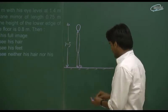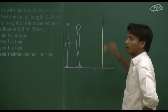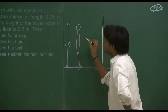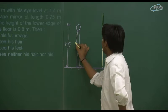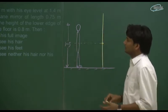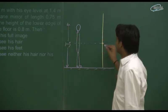This is a mirror. This is a wall. The boy is 1.5 meter, the mirror is 0.75 meter.